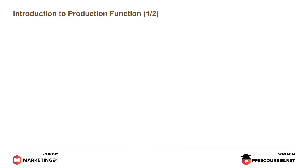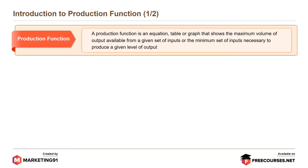Let's start with the introduction to Production Function. A production function is an equation, table or graph that shows the maximum value of output available from a given set of inputs, or the minimum set of inputs necessary to provide a given level of output.